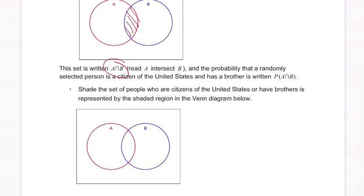That's the intersection right here, and look at the notation A and B. The next one says shade the set of people who are citizens of the United States or have brothers and they want to represent it in the Venn diagram below. I think the wording here is a little bit off. Essentially this region right here, but I'm not going to draw it like this because the overlap counts that intersection twice. I'm just going to say it's this piece right here—we'll be careful not to shade twice.